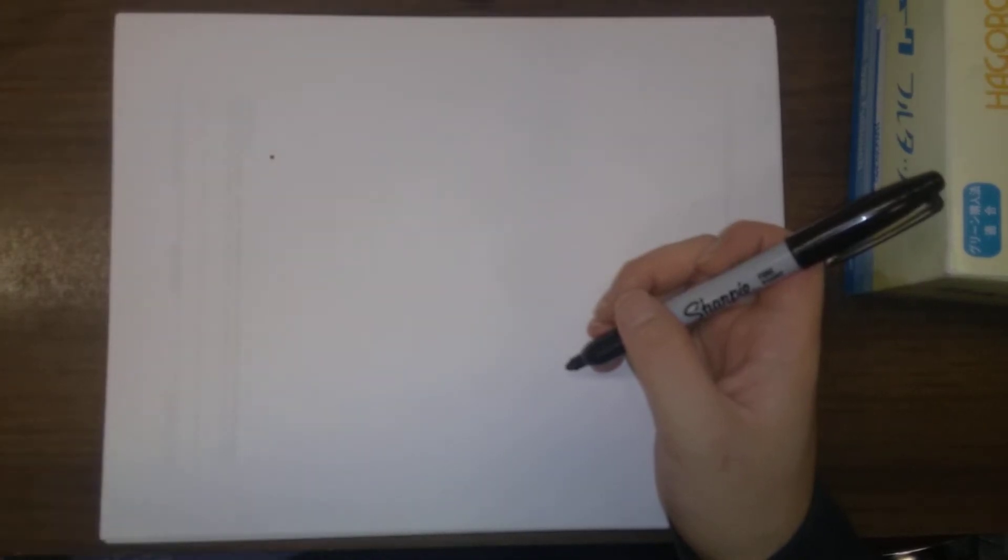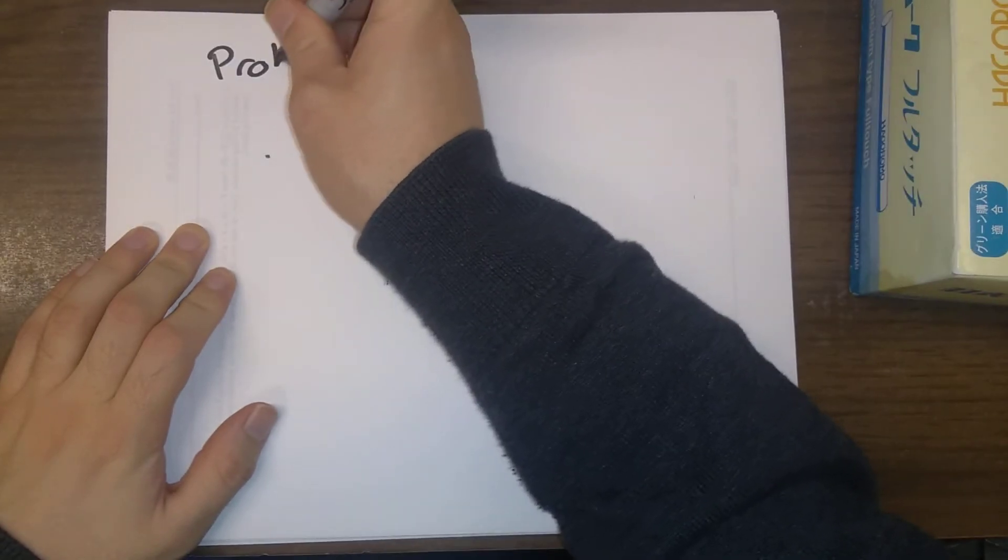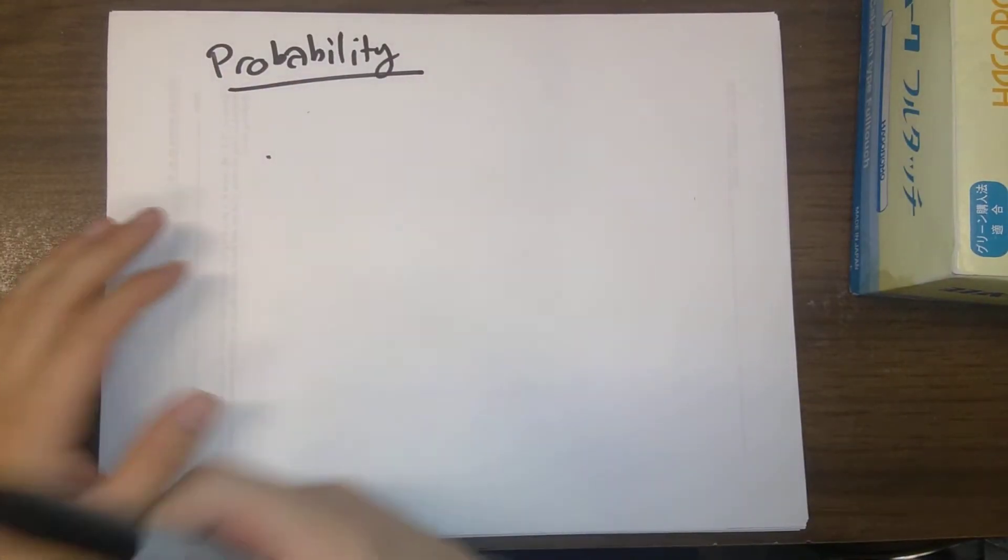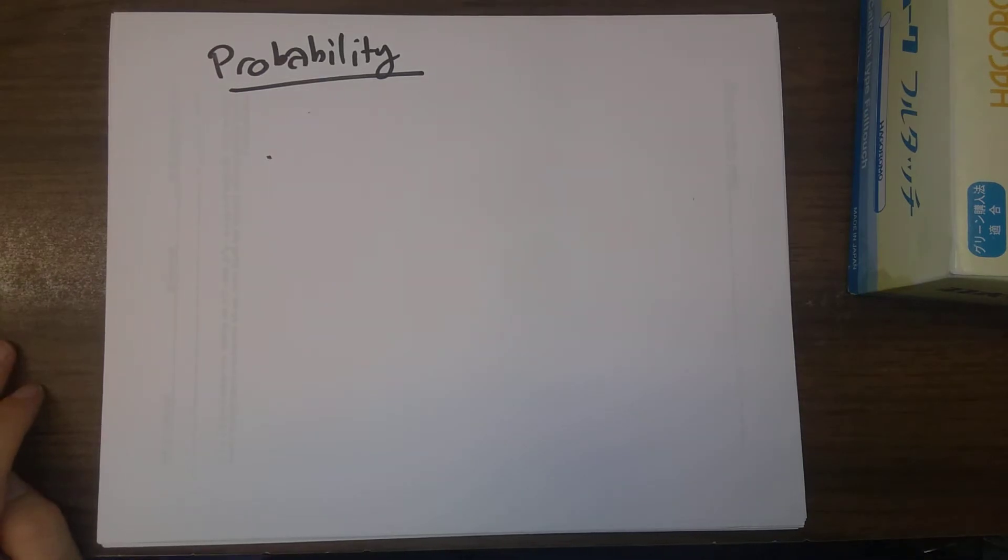I want to do one more example here in section 5.4 to talk about probability. So as it turns out, there's lots of calculations we can do with definite integrals that have to do with probability. We're going to do one of those right here.